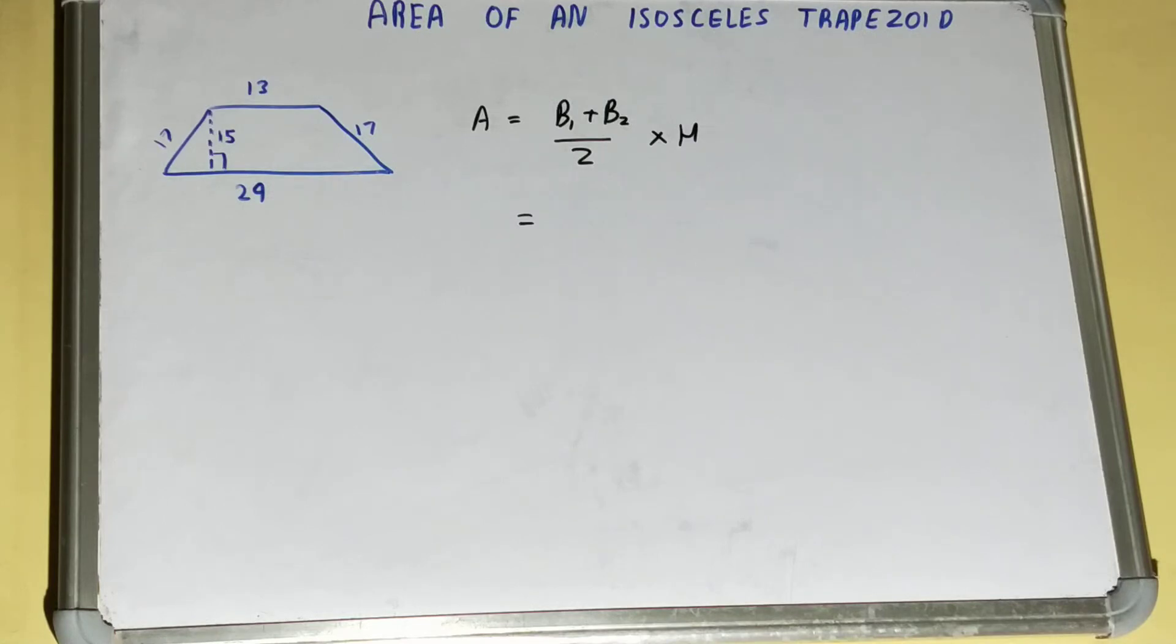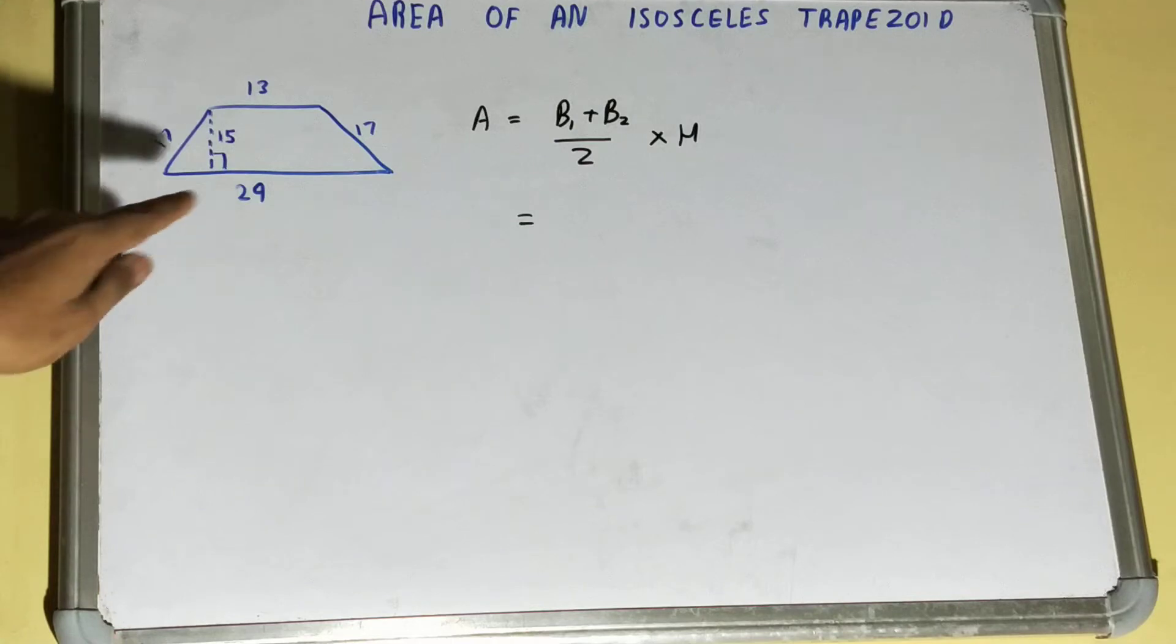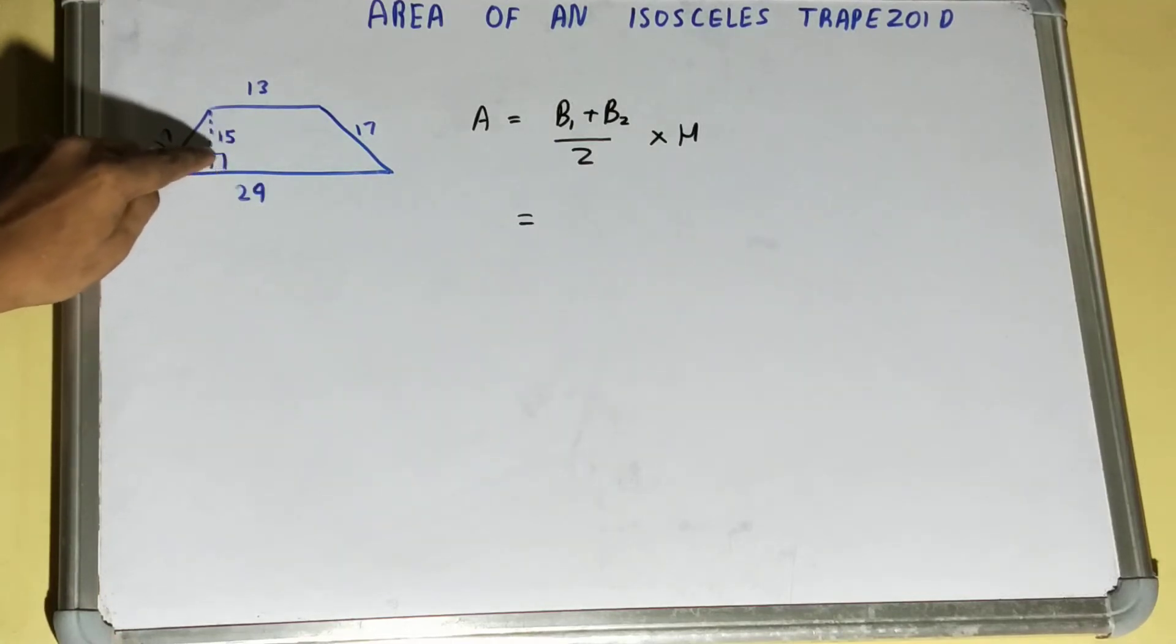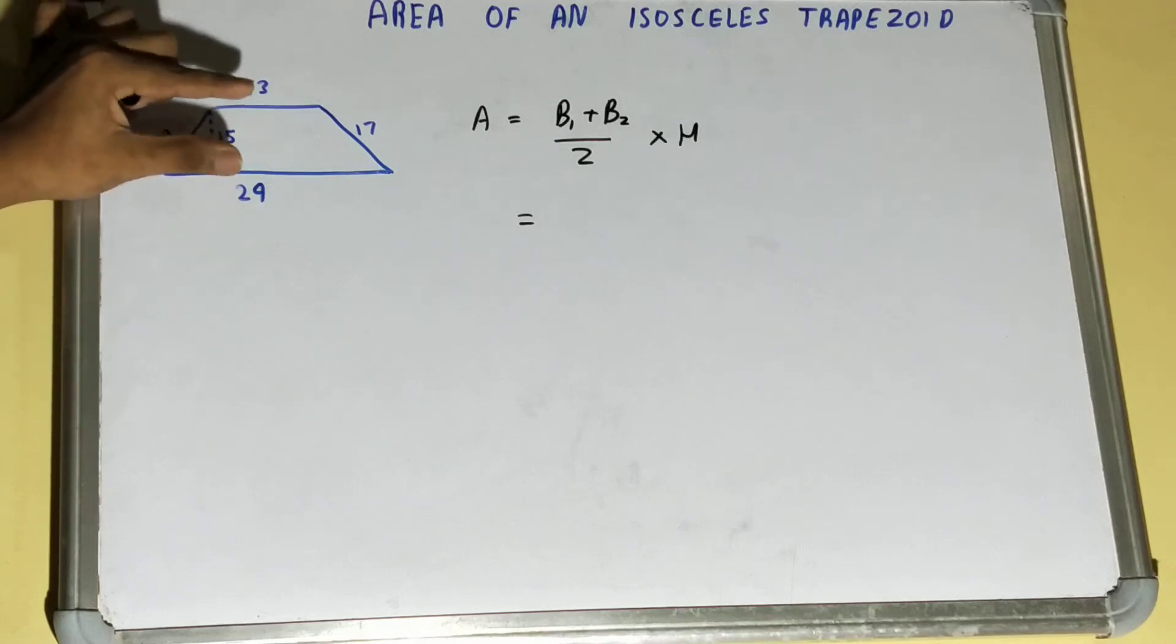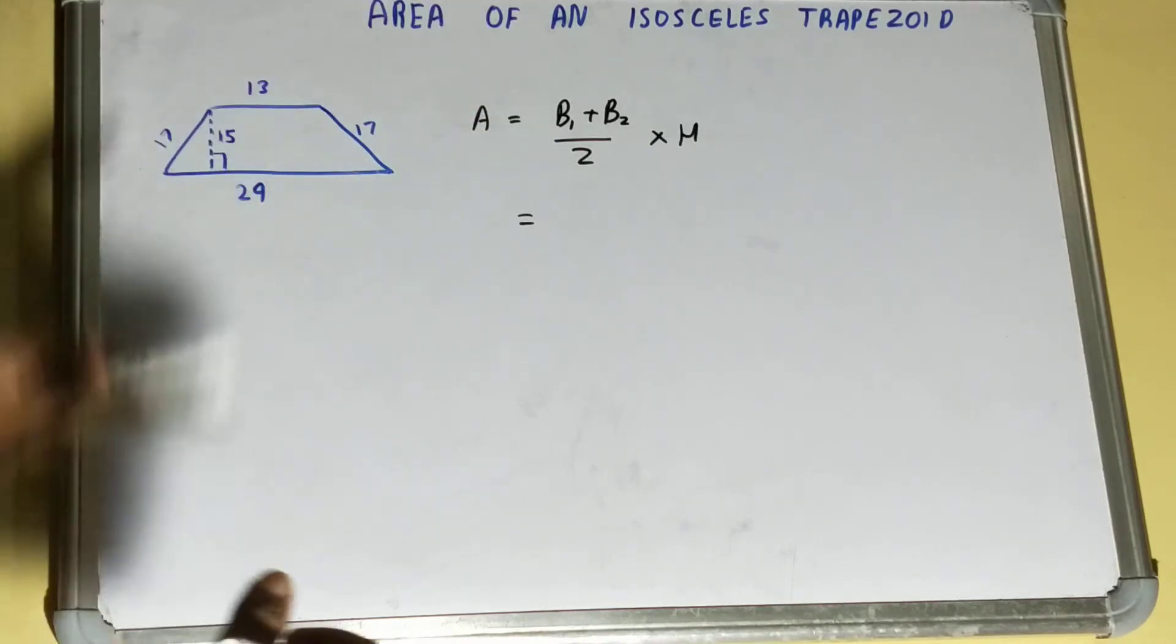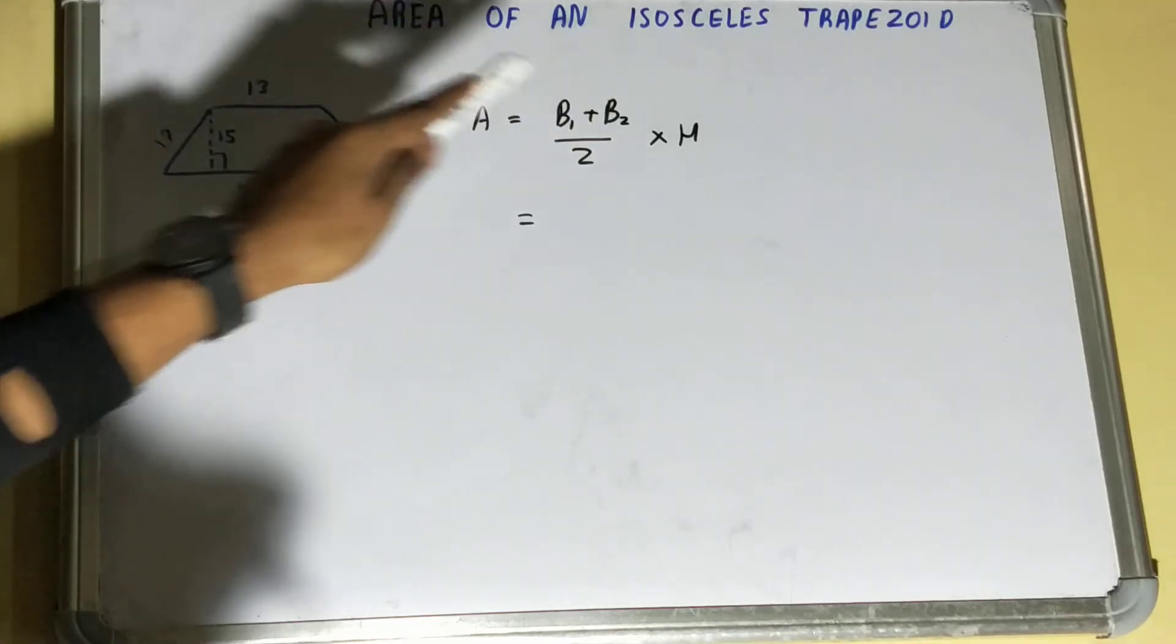Now I'll be applying it. You will be considering base 1 as the bigger one, the bigger base on which the perpendicular height is drawn. You can pick the parallel sides, and the bigger one will be B1 and the smaller one will be B2.